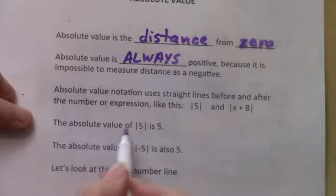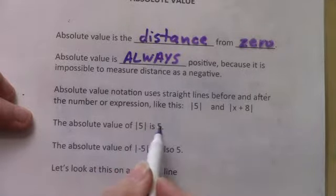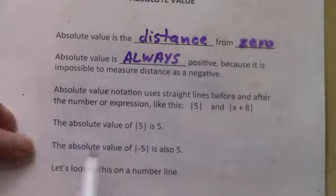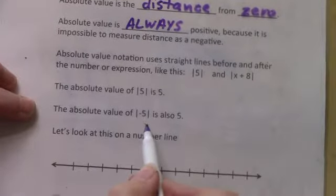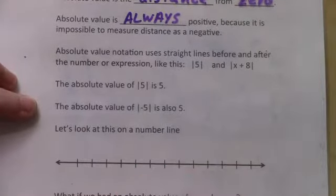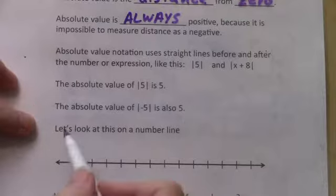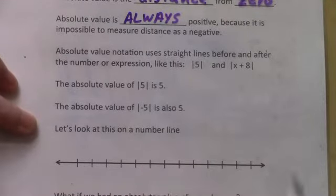So the absolute value of 5 is 5. The absolute value of negative 5 is also 5. Let's look at what that means on a number line — how can these both have the same answer?